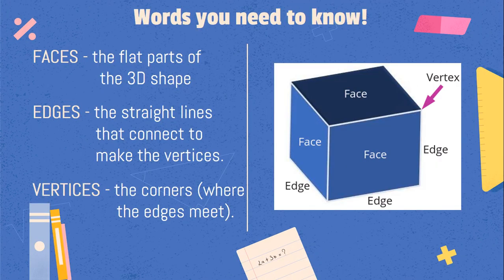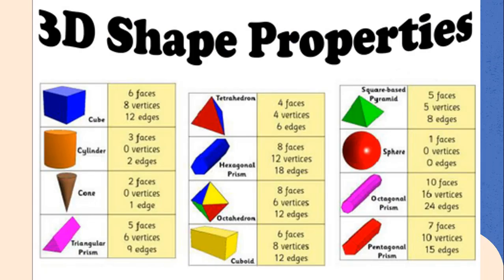So things that you need to know when you're looking at 3D shapes are faces, which are the flat parts of the 3D shapes, edges, which are the straight lines that connect to make the vertices, and vertices, which are the corners. So that's where the edges meet. So those are the three ways that you can look at describing 3D shapes, and you'll need to know these today for sorting 3D shapes as well.